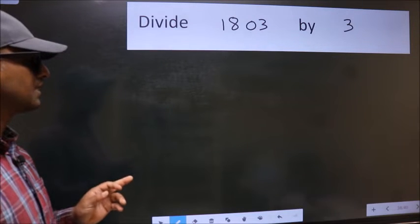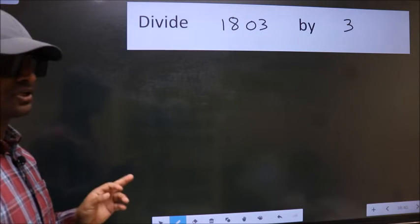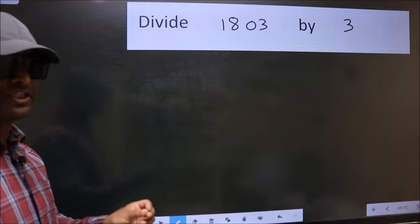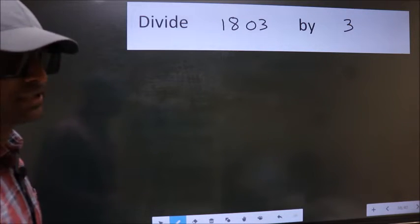Divide 1803 by 3. To do this division, we should frame it in this way.